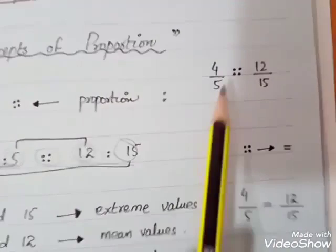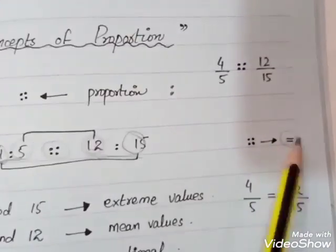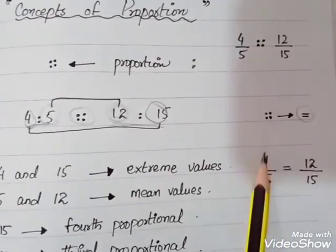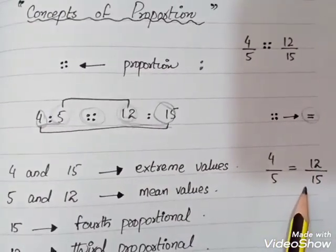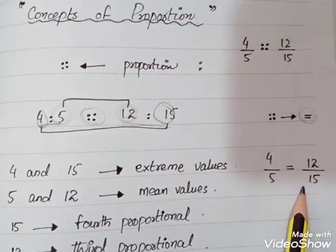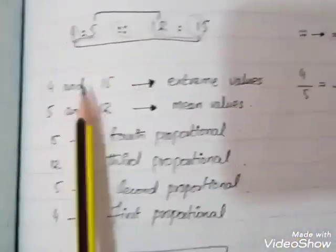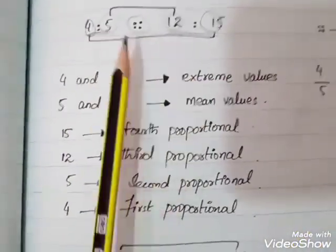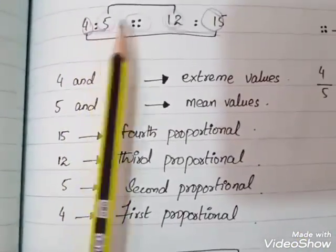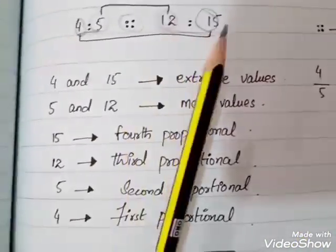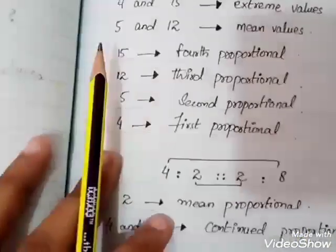And remember one thing: we can use proportion in this way, and we can write it as 4 upon 5 equals to 12 upon 15.